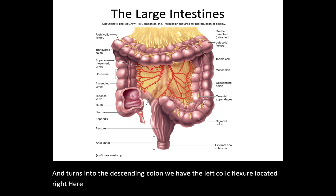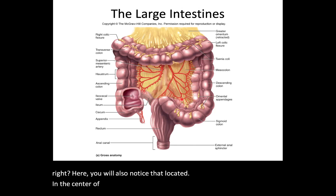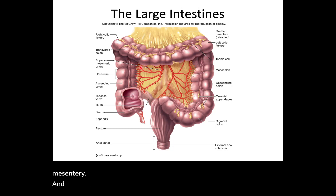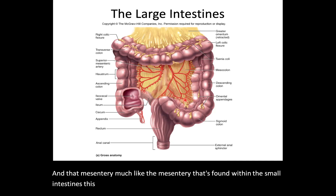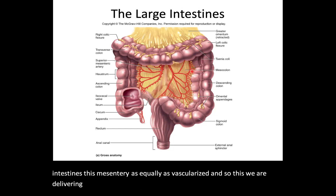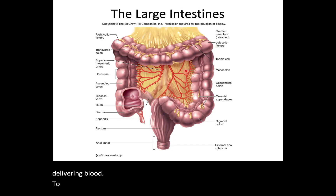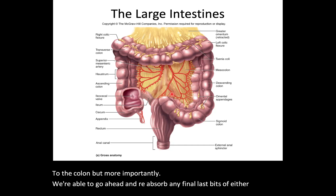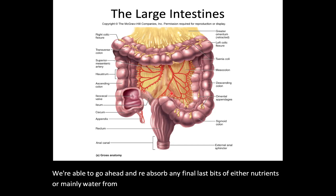Located in the center of the colon or large intestine is a mesentery. That mesentery, much like the mesentery found within the small intestines, is equally vascularized. We are delivering blood to the colon, but more importantly we are able to reabsorb any final last bits of either nutrients or mainly water from the matter that's been left to the colon before it officially becomes feces.